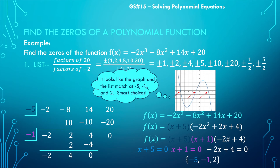We got these zeros from the graph and verified them algebraically. That doesn't always happen — I chose something fairly easy to start us off with so we could see the process clearly. Let's see another example where that's not the case.